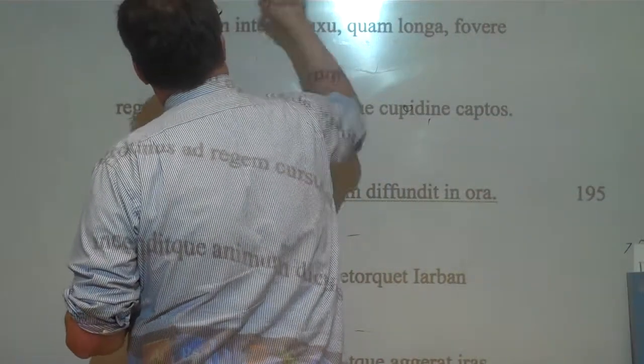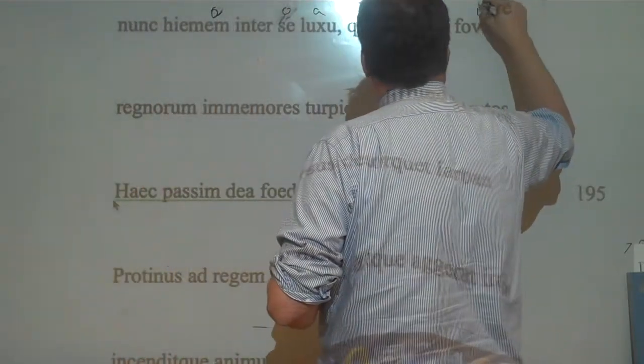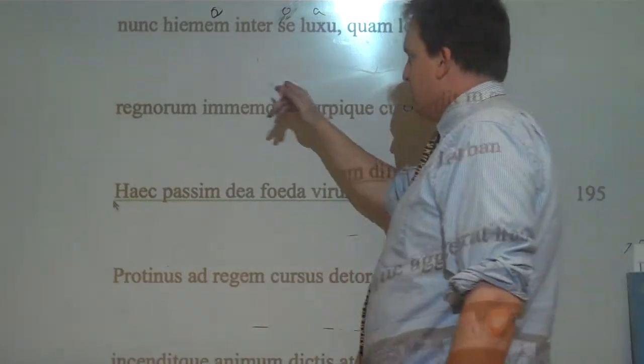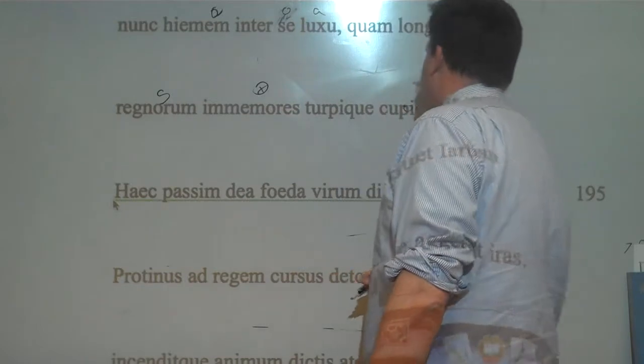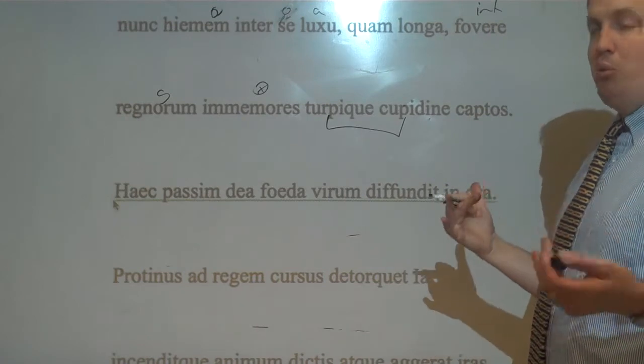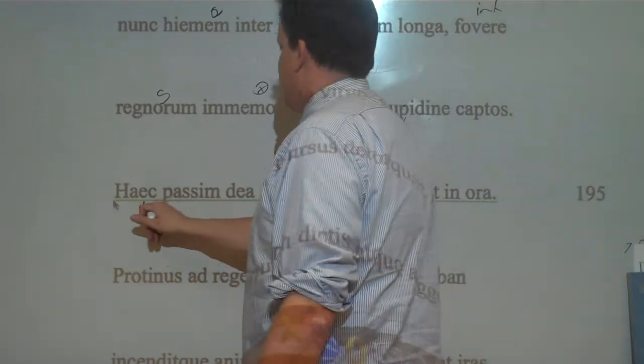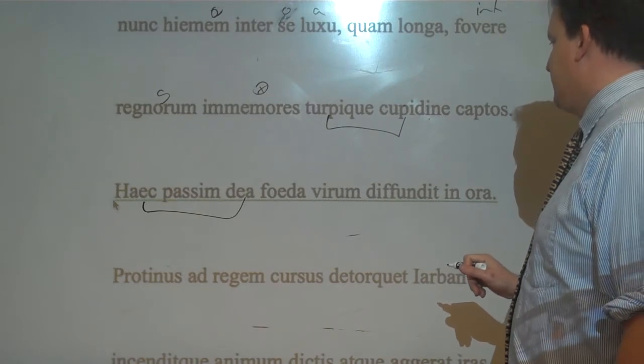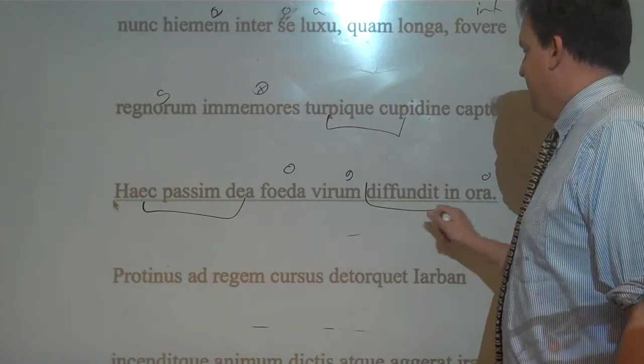So this is accusative, ablative luxu, and Fowere's an infinitive. And then we have Imores. Finally we get our accusative subject here. So forgetful of the kingdom and captured by a base desire. So this amor that they have is cupidity, is desire. This goddess immediately poured these foul things into the faces of the men. There we go.